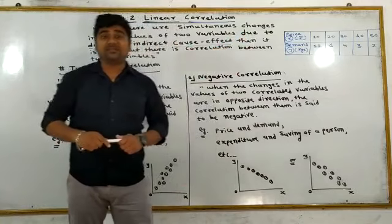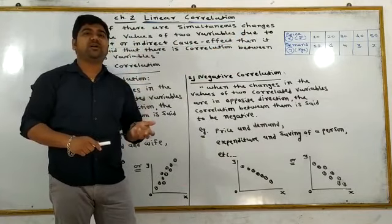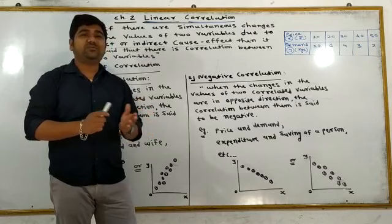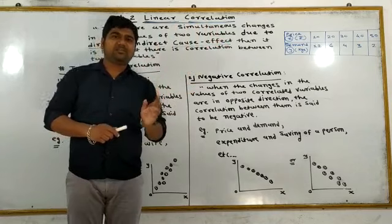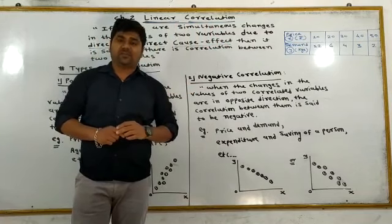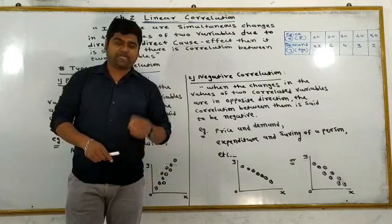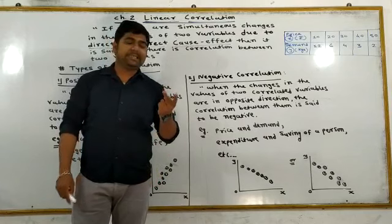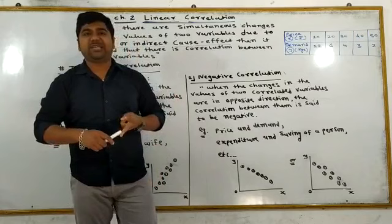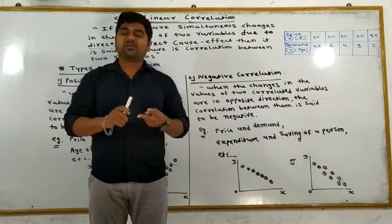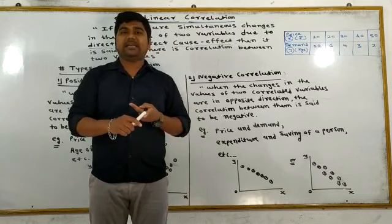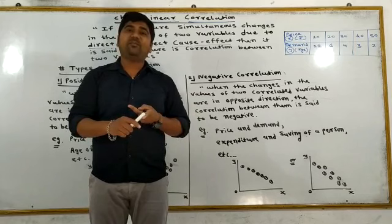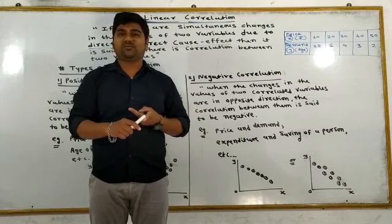In any region, if you have changes, you will have a correlation between two variables. Let us know this example. There are two types of correlation: positive correlation and negative correlation. If there is a correlation in the same direction, we call it positive correlation. If there is a correlation in the opposite direction, we call it negative correlation.